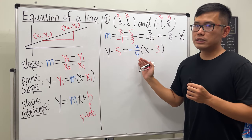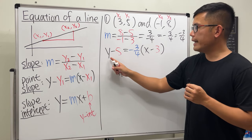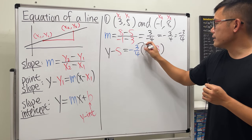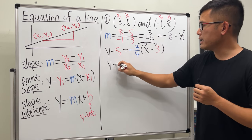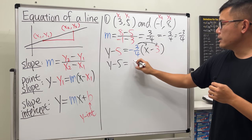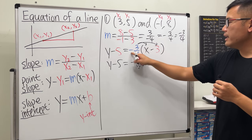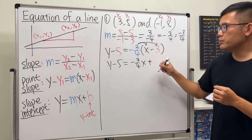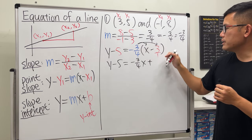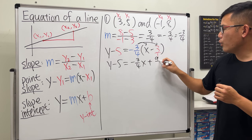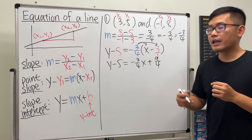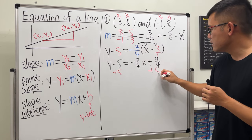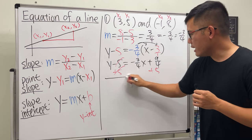Now use point-slope form: y − 5 = (−3/4)(x − 3). Distribute the −3/4: y − 5 = −(3/4)x + 9/4, since negative times negative is positive and (3/4)(3) = 9/4.